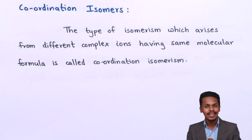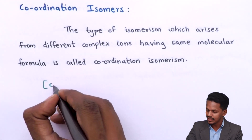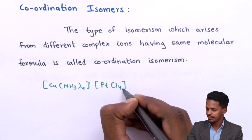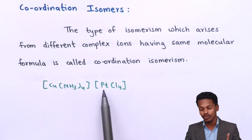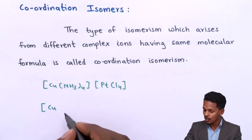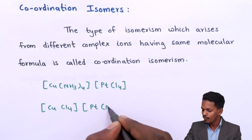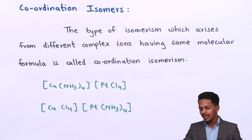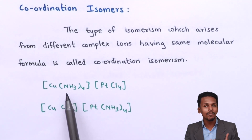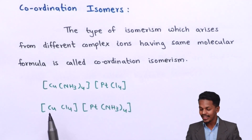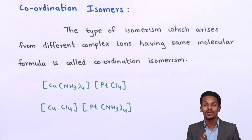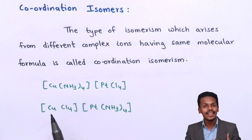For example, consider [Cu(NH₃)₄][PtCl₄] where copper has a coordination number of 4 and platinum also has a coordination number of 4. The other complex is [CuCl₄][Pt(NH₃)₄], where copper is surrounded by 4 chlorine atoms and platinum is surrounded by 4 ammonia molecules. Both have the same molecular formula but different ligands attached — in one, Cu is bonded to NH₃ and Pt to Cl; in the other it is reversed. These are coordination isomers.